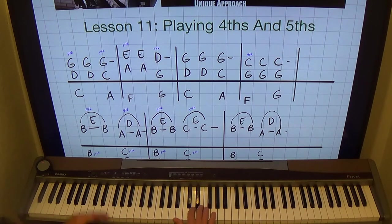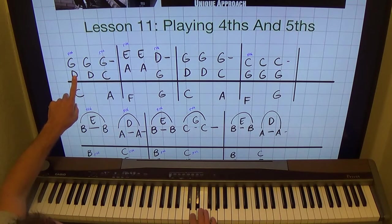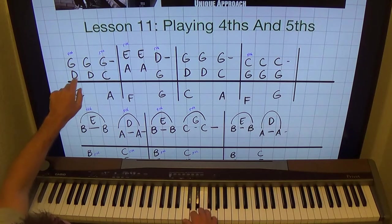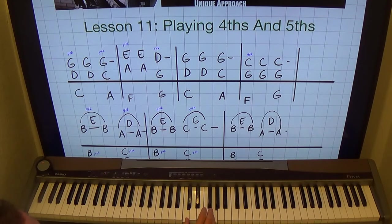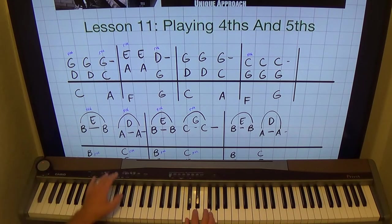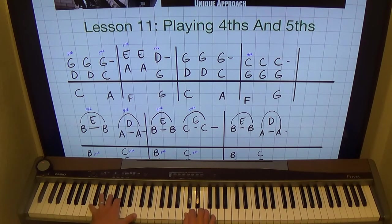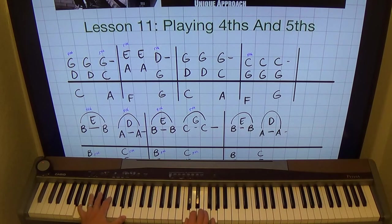So we start off with a fourth on the right hand, D and G. I'm going to play two of those with two and five. Then I'll go to a fifth with my C and G. And on the left hand, I'm just going to add a C and an A on the bass. So that's our open fourth and fifth.